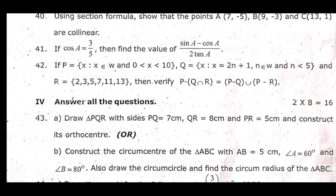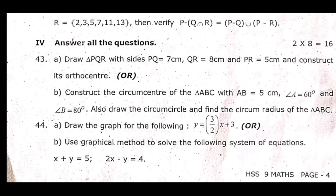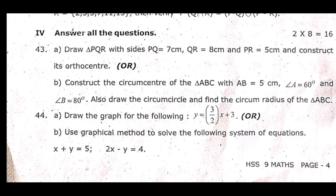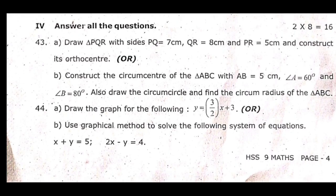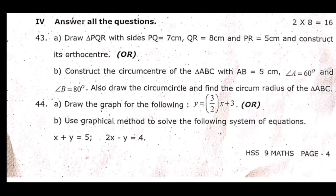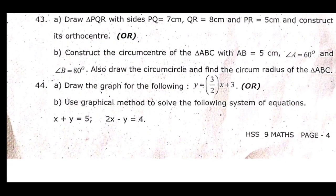40th: Using the section formula, show that the points A(7, -5), B(9, -3), C(13, 1) are collinear. 41st: If cos A equal to 3 by 5, then find the value of (sin A minus cos A) by 2 tan A. 42nd: If P equal to {x such that x belongs to W and 0 less than x is some condition}. 43rd: Draw triangle PQR with sides PQ equal to 7 cm, QR equal to 8 cm, PR equal to 5 cm, and construct the orthocenter.